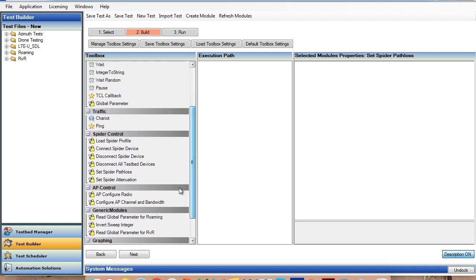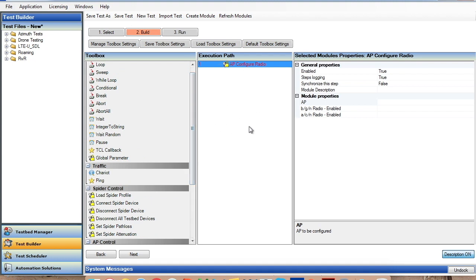The way Test Builder works is it comes pre-configured with modules here to do different things. And to create a test case, it's very simple. I just drag and drop these modules in whatever configuration I want. Then I can go and configure these modules individually.